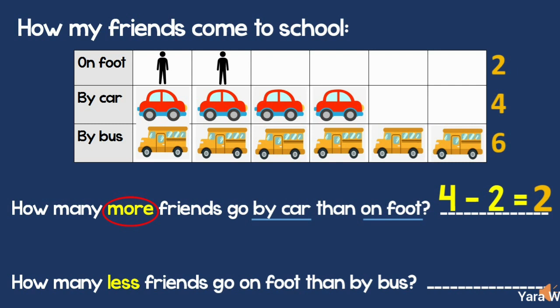How many less friends go on foot than by bus? I'm comparing on foot and by bus. Bigger number first — always, it doesn't matter if you start with more or less. So, 6 minus 2 equals 4. There are 4 less friends who go on foot than by bus.